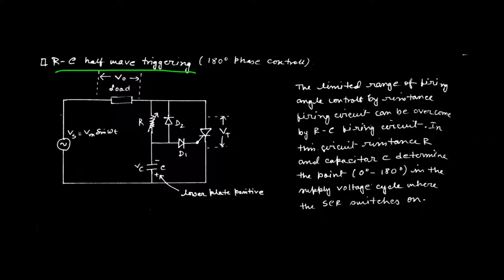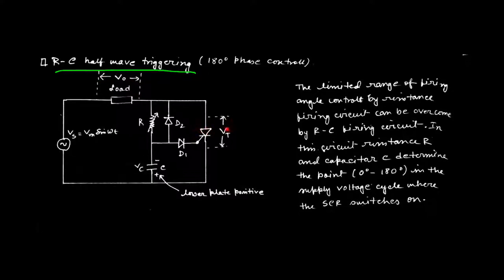In this circuit, resistance R and capacitor C determine the point anywhere from 0 degree to 180 degree in the supply voltage cycle where the SCR can be switched on. Consider this simple circuit for RC half wave triggering circuit, which is constructed by a variable resistance R, two diodes D1 and D2, one SCR that is T, and a capacitor C. A load is connected directly to the supply, and the supply voltage is an AC signal defined by Vs equal to Vm sin omega t.